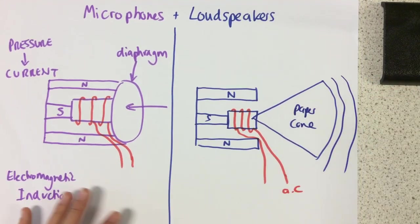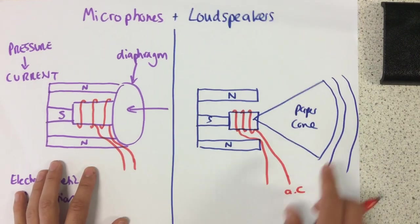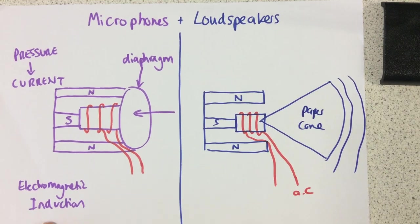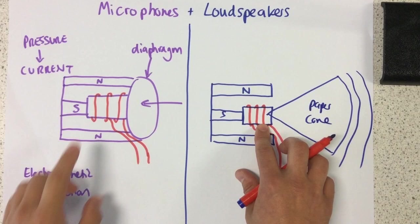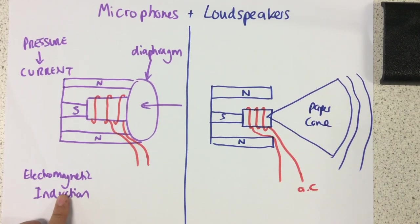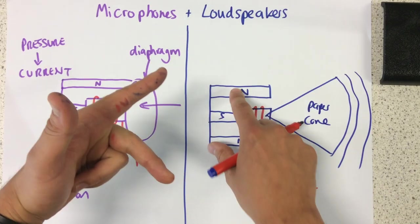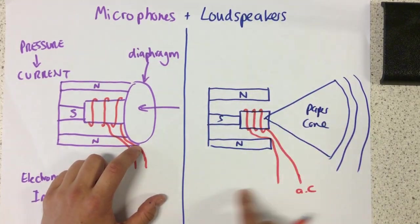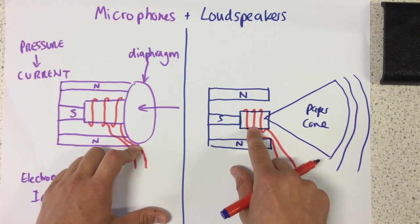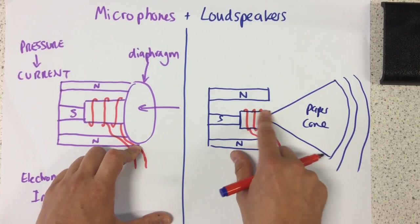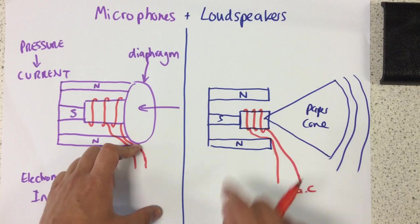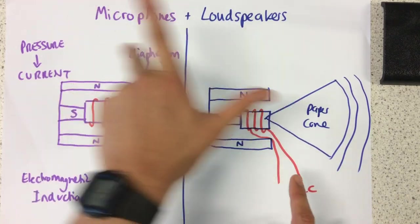And those vibrations are going to create the sound waves that are given off here. Whereas in a microphone we've got electromagnetic induction, here instead we're using the fact that we've got this magnetic field from the magnets within the loudspeaker and the magnetic field that's created in concentric circles around each one of these wires in order to produce a force.